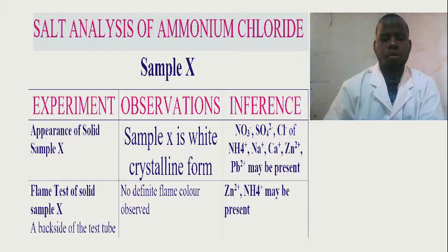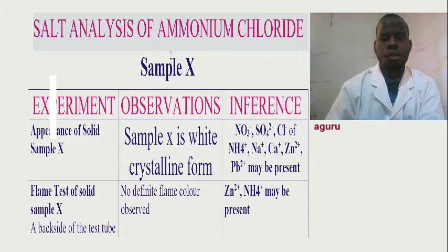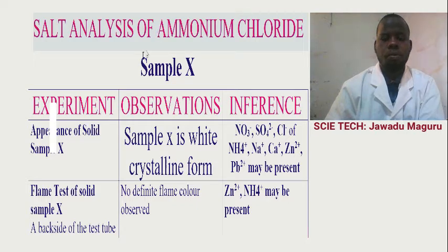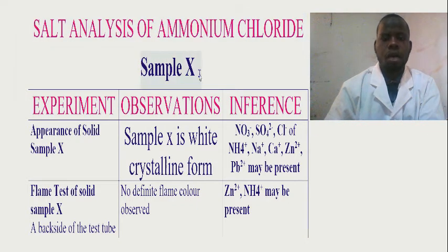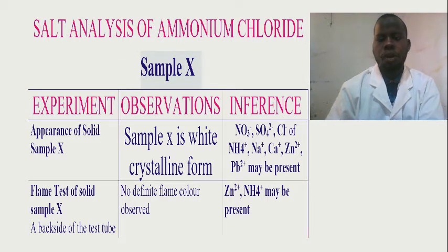We consider this the question for unguided questions, or unguided steps for the analysis of the salt sample which is called ammonium chloride. Our sample, we say our sample X. So let's go to the lesson to see the report. Salt analysis of ammonium chloride — our sample, we assume it is sample X, is unknown.